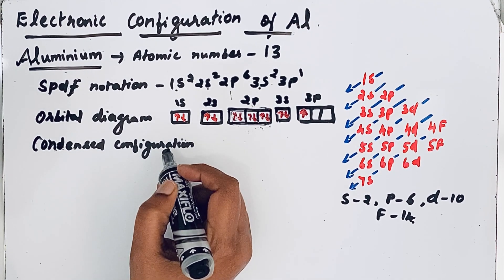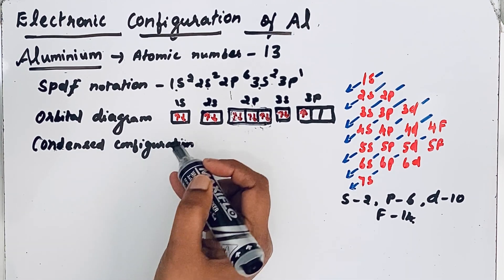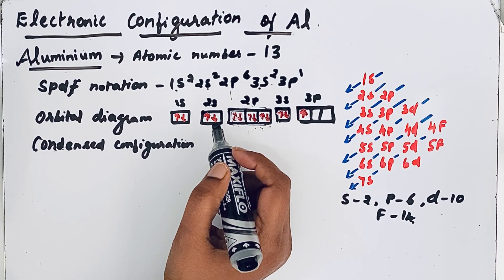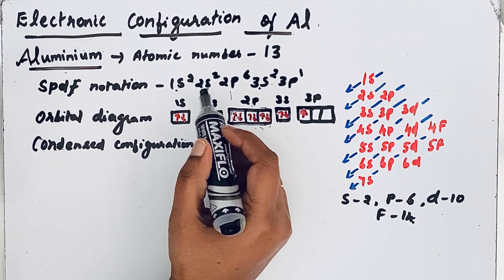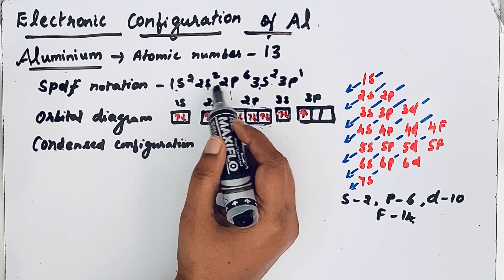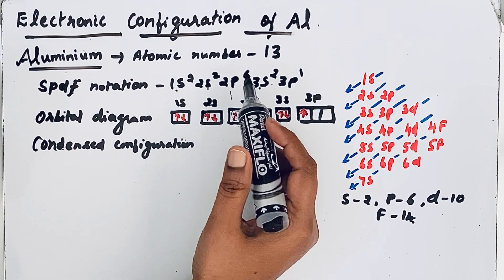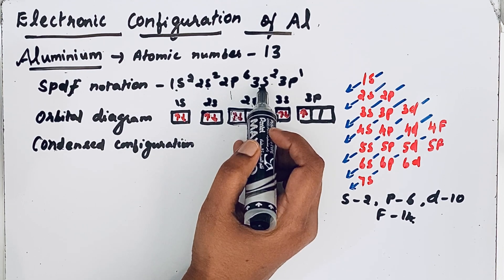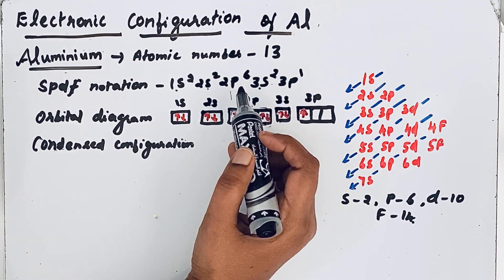In the condensed configuration, we reduce the electronic configuration. Analyzing the spdf notation, the electrons are present up to the third shell.